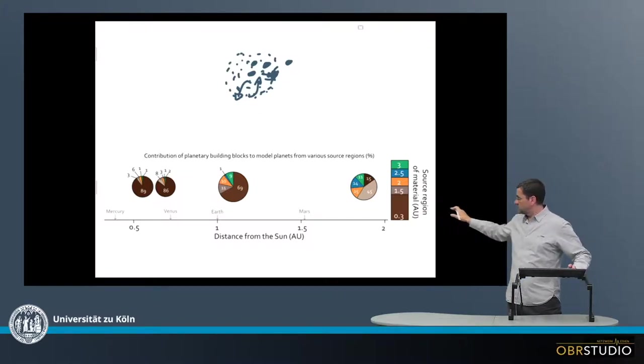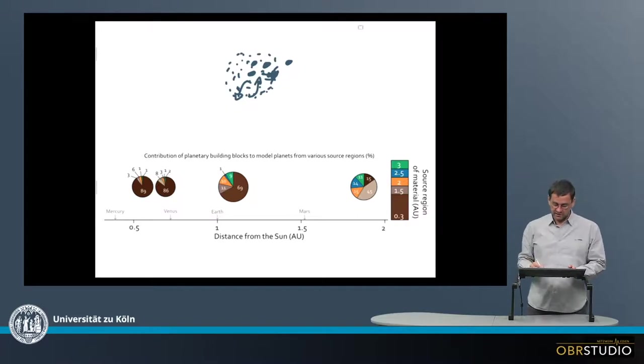So on the x-axis is the distance from the sun in astronomical units. And here is where Mercury is today, Venus today, Earth today, and Mars today.